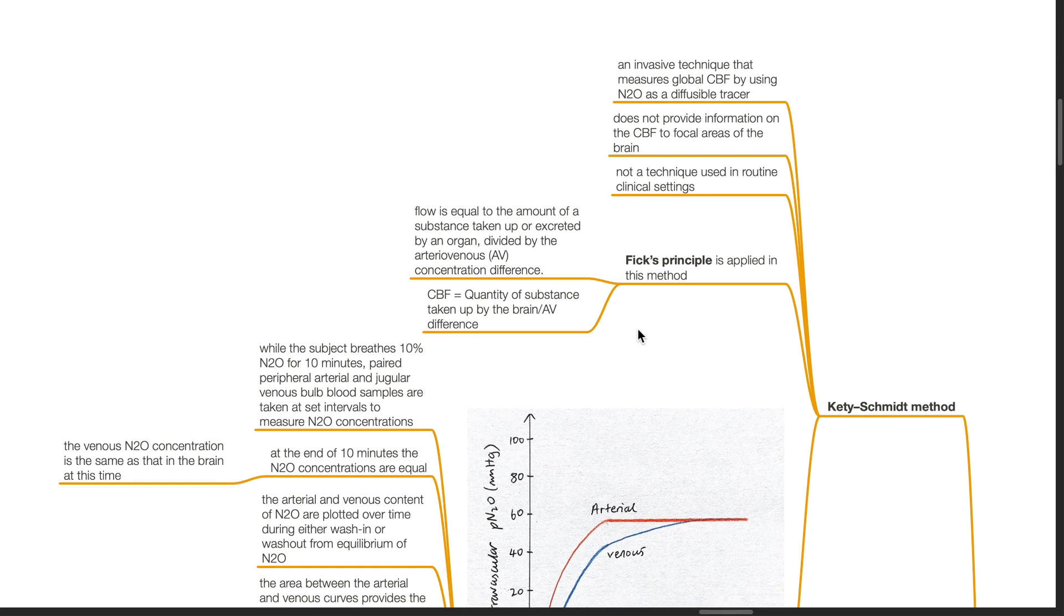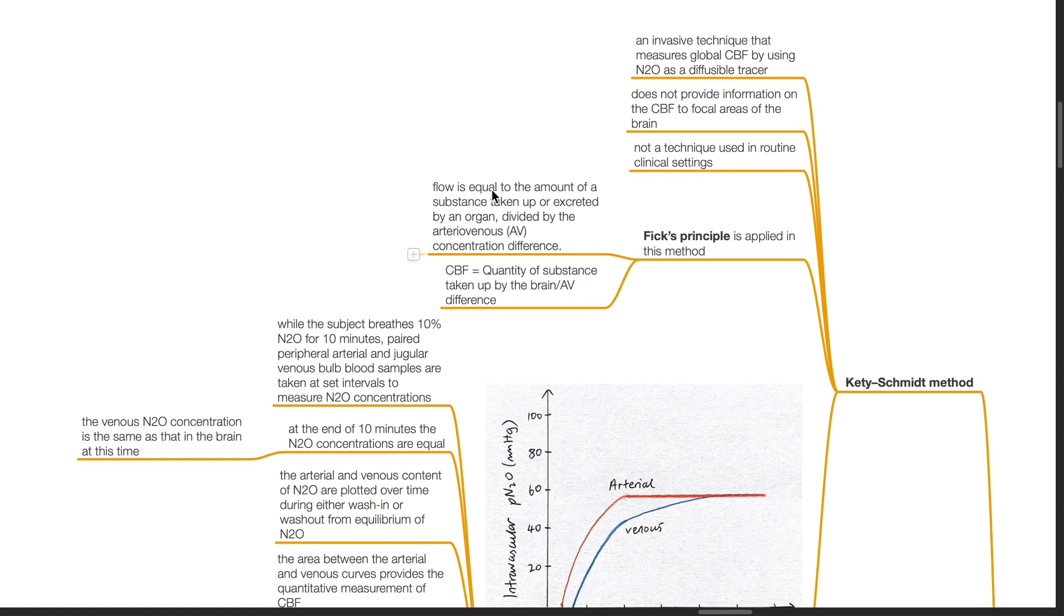The Fick principle is applied in this method, which refers to flow is equal to the amount of a substance taken up or excreted by an organ, divided by the arteriovenous concentration difference. CBF equals quantity of substance taken up by the brain divided by AV difference.